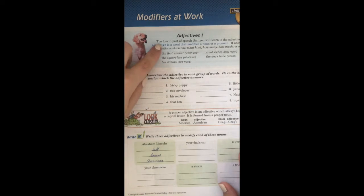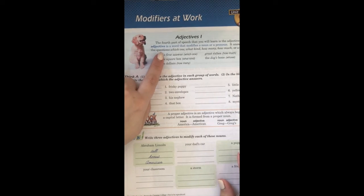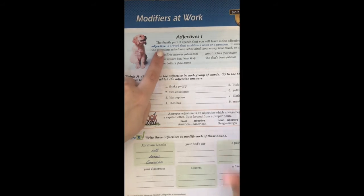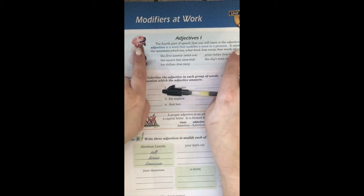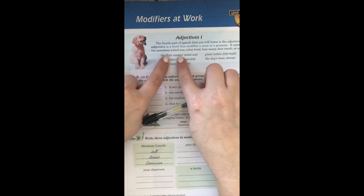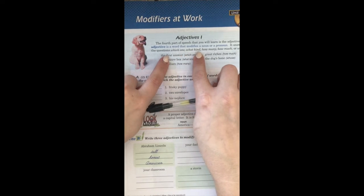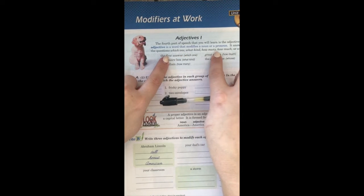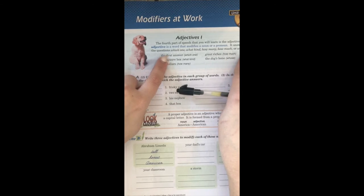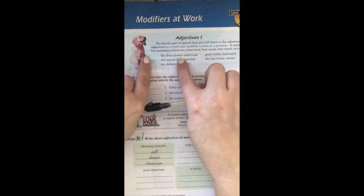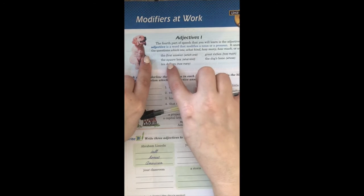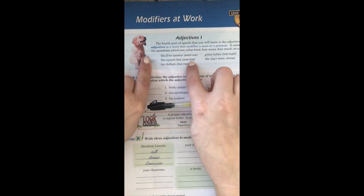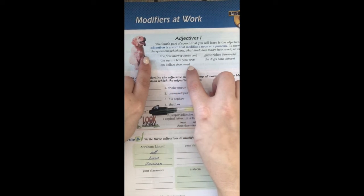The fourth part of speech that you will learn is the adjective. An adjective is a word that modifies a noun or a pronoun. It answers the questions: which one, what kind, how many, how much, or whose. For example: 'the square box' answers 'which one,' 'what kind' gives a description, and 'ten dollars' answers 'how many.'